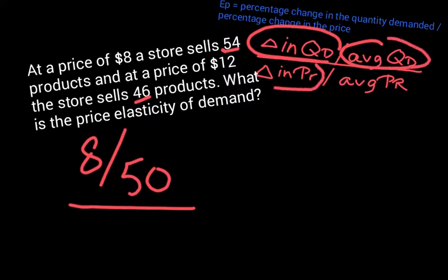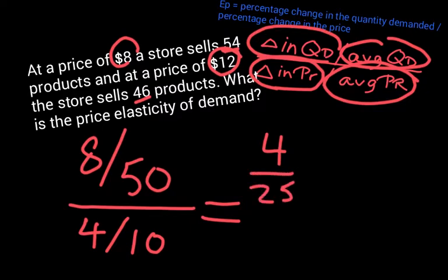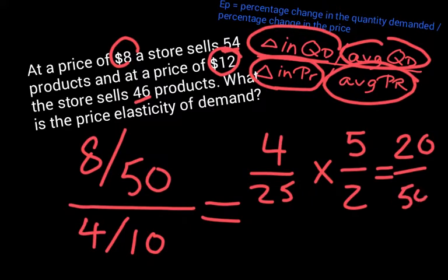Now for the bottom part: the change in price. The price goes from $8 to $12, so there's a change of 4. The average price — the number exactly in the middle between 8 and 12 — is 10. You can also do 8 plus 12 equals 20, divided by 2. So the price elasticity of demand is (8/50) divided by (4/10). Simplifying: 8 divided by 50 is 4/25, and dividing by 4/10 means multiplying by 10/4, which is 5/2. So we get 20/50, which simplifies to 2/5, which is 0.4. The elasticity here is 0.4.